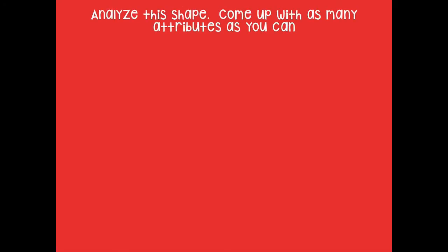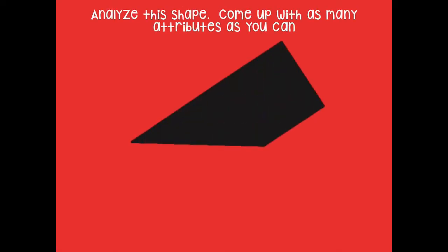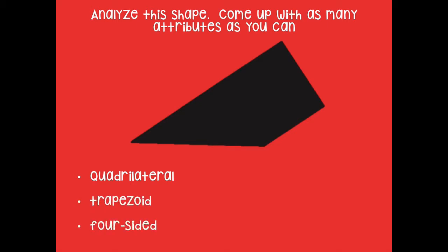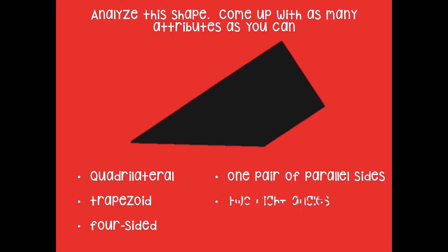Let's work on our lesson for today with attributes of polygons. We're going to analyze the shape and come up with as many attributes as you can that describe it. For example, it's a quadrilateral because it has four sides. Give yourself a minute of think time. Here's what I came up with: it's a trapezoid, it's four-sided, has one pair of parallel lines, two right angles, and two equal sides.